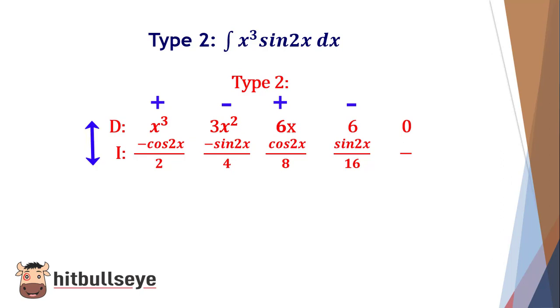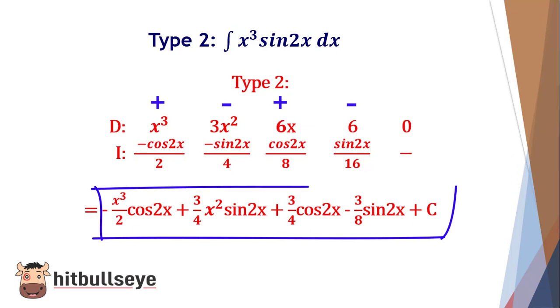After that, you just have to multiply both expressions, keeping in mind the sign above it. So it will give you -x³cos(2x)/2 + 3x²sin(2x)/4 + 6xcos(2x)/8 - 6sin(2x)/16 + C. You can check it yourself.